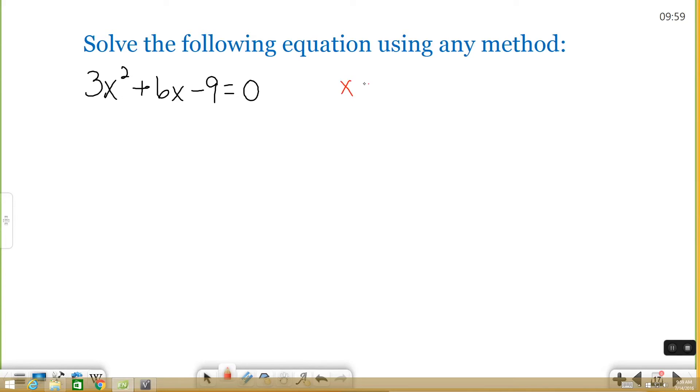It says x equals negative b plus or minus the square root of b squared minus 4ac all over 2a. And your a, your b, and your c are just the numbers that correspond here. So you have an a, a b, and a c. All you're doing is plugging those numbers into your formula and simplifying it. So let's go ahead and do that.